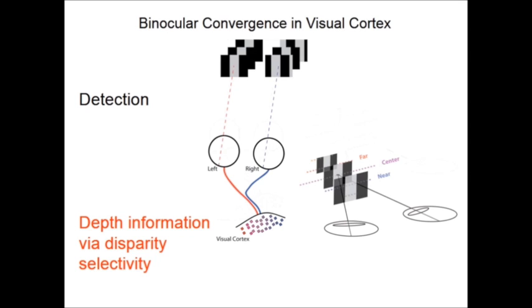Neurons are known to be selective for binocular disparity. Both our labs and others have found disparity selectivity in awake mice, primates, and some other carnivores.